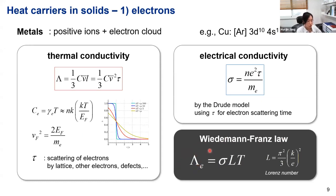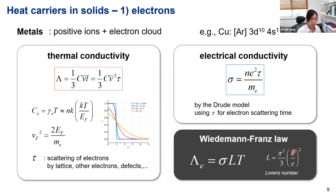The Wiedemann-Franz law states that electron thermal conductivity is proportional to electrical conductivity times temperature, with a numerical constant L called the Lorentz number. The Lorentz number is the ratio of the Boltzmann constant over elementary charge squared — it represents the conversion between thermal energy and charge. So if we have information about electrical conductivity, we can determine the electron thermal conductivity. This makes the description of electron thermal conductivity relatively straightforward — we directly apply kinetic gas theory to electrons.